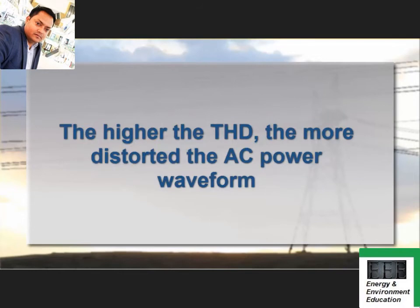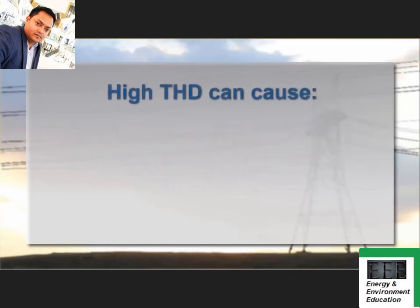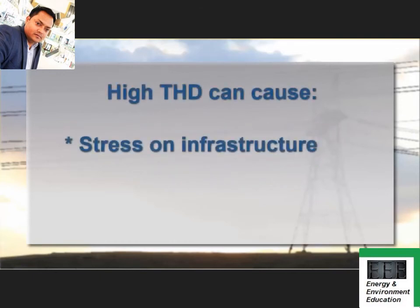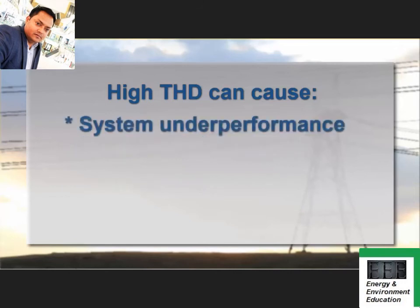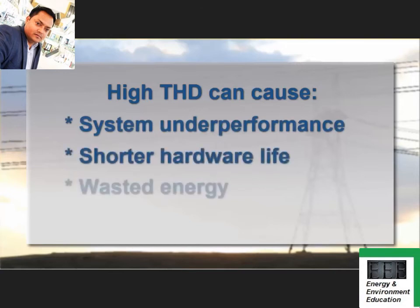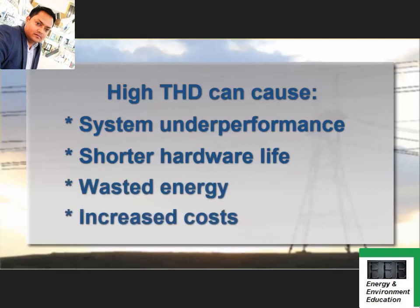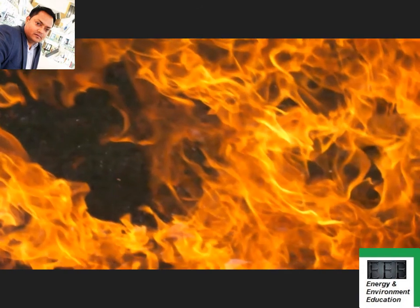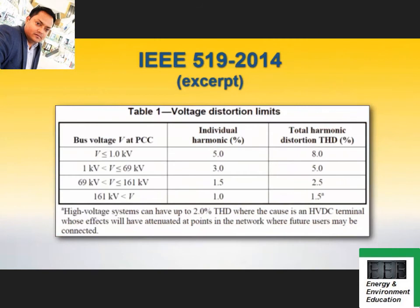The higher the THD, the more distorted the electricity's waveform. A high percentage of THD can stress electrical infrastructure and equipment, resulting in significant electricity dissipated as excess heat. Left unaddressed, harmonic distortion produces issues such as system underperformance, shortened hardware life, wasted electricity, and increased electrical costs. In extreme cases, THD can increase the risk of personal injury. Standards such as IEEE 519-2014 define how much harmonic distortion is allowed for certain types of facilities.